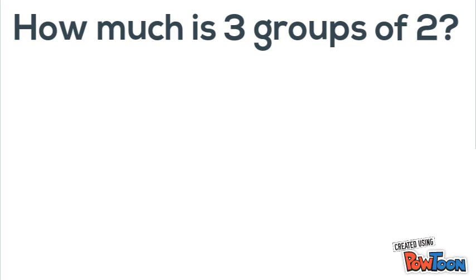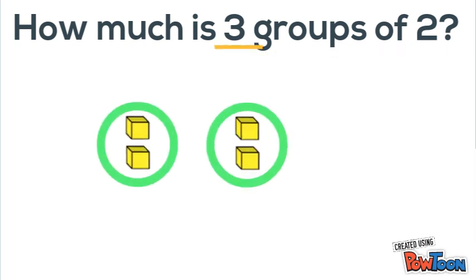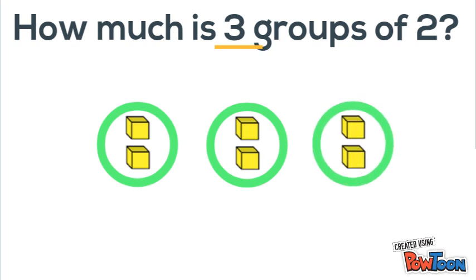First problem: how much is three groups of two? Groups of two tells me that I need to put two in each group. And three groups tells me I need three of those groups. So I make three of those groups and now I can add up to find the total. So two plus two plus two.